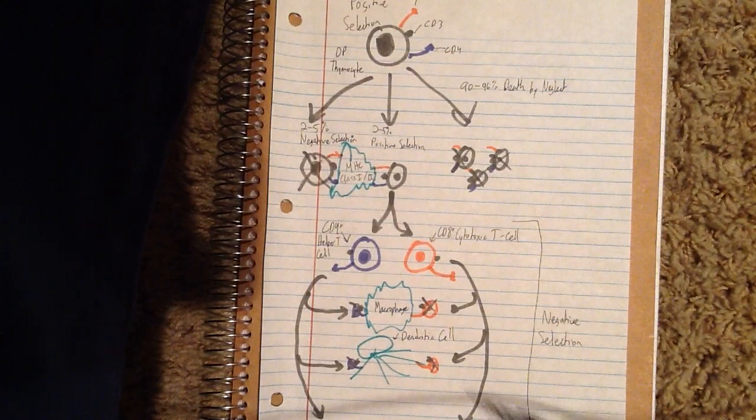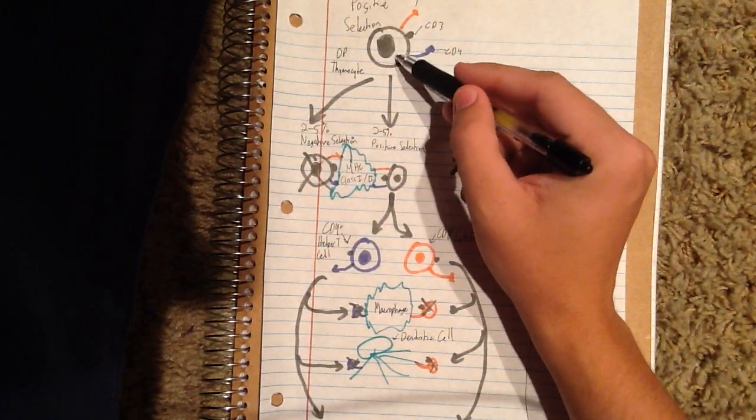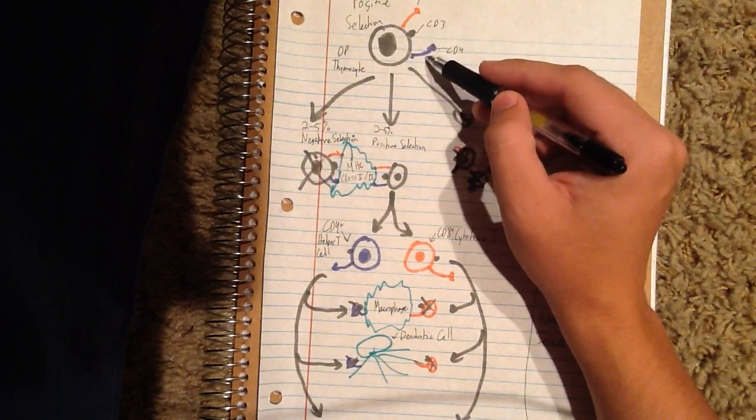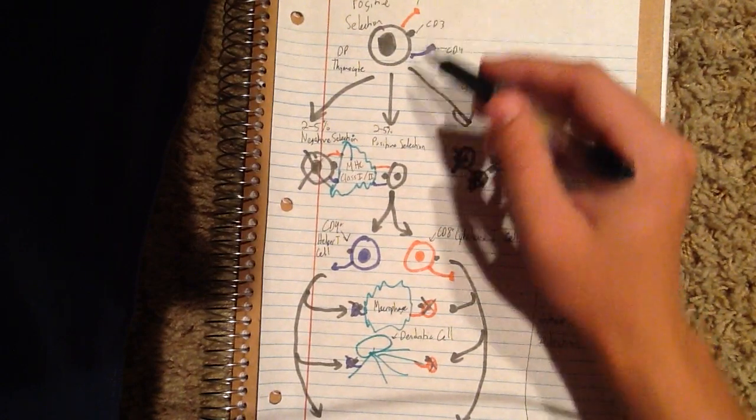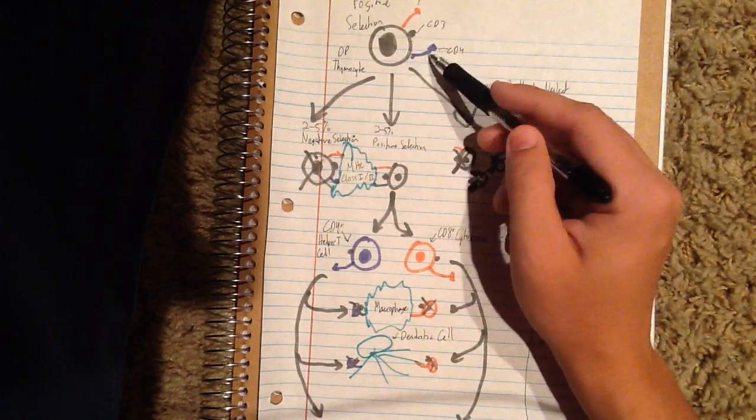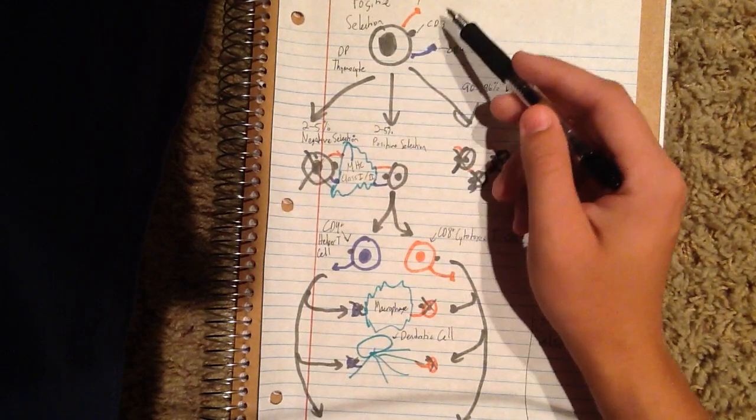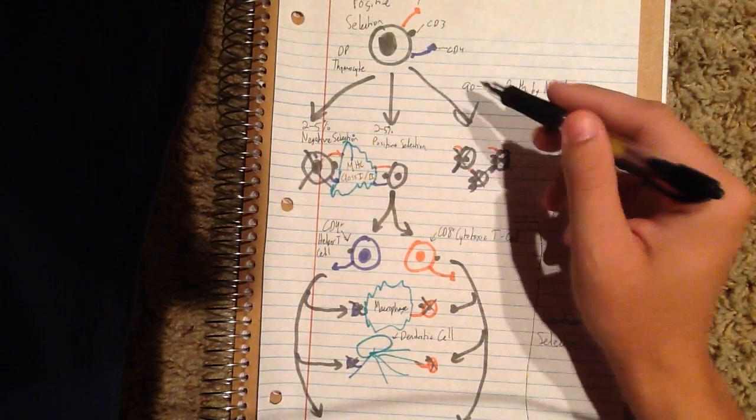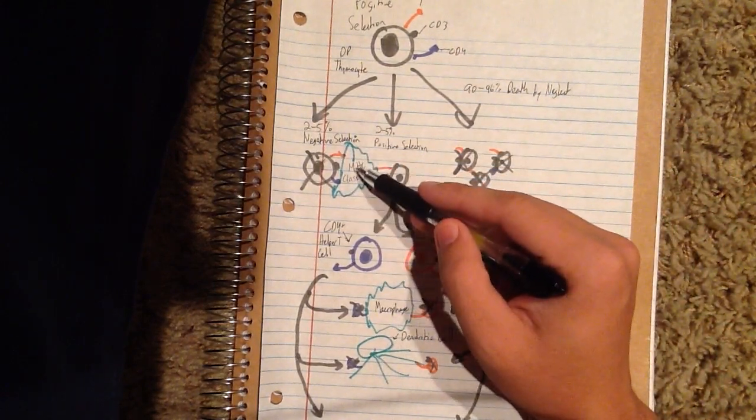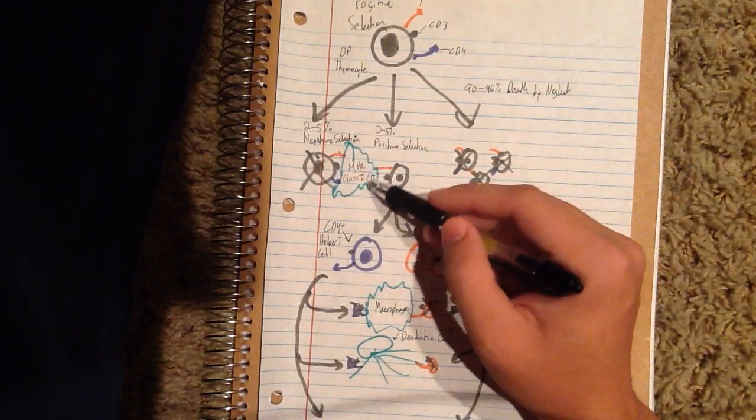So let's say you have a double positive thymocyte, and here is your CD8 molecule, CD3 molecule, and CD4 molecule. Once you have this double positive thymocyte, and these CD molecules are being positively expressed, you have three options with this thymocyte. Two of these options are when you bind the double positive thymocyte to this MHC class 1 or class 2 molecule.